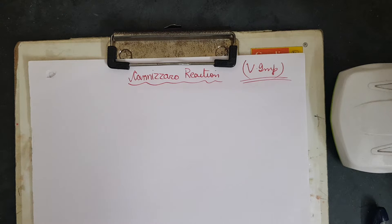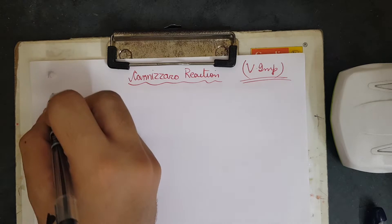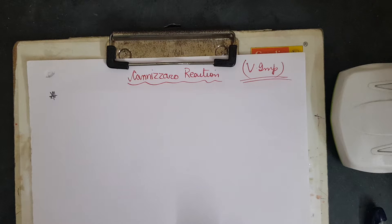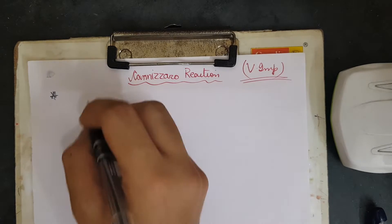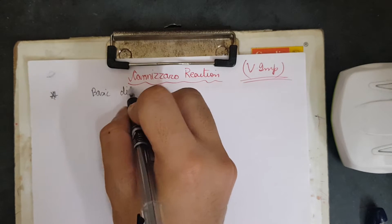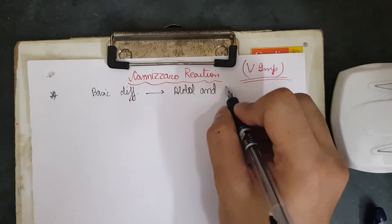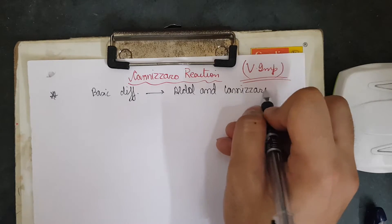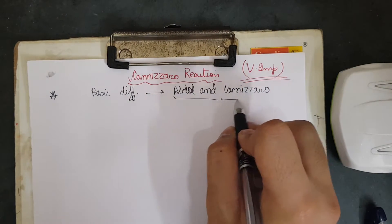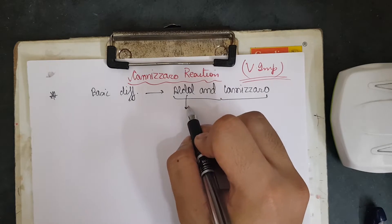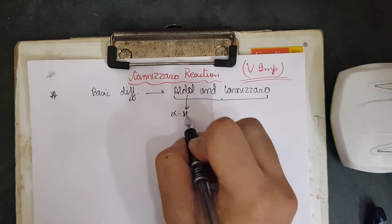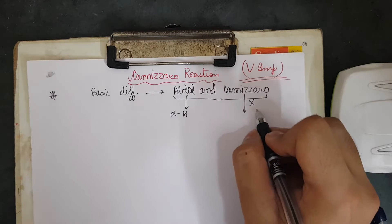Hello everyone, welcome to my new video regarding the Cannizzaro reaction. I'll be discussing the reaction in detail along with examples. First, let me explain the basic difference between aldol and Cannizzaro reactions. The key difference you must remember is that aldol has an alpha hydrogen while Cannizzaro does not have alpha hydrogen.